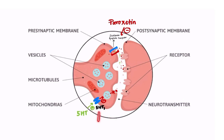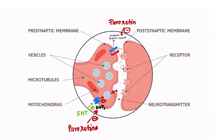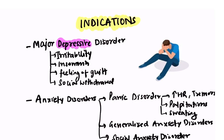There are also 5-HT1 receptors present on the presynaptic side. Their function is that when they receive 5-HT, they inhibit the release of vesicles into the synaptic cleft. Paroxetine also blocks this receptor, and hence vesicle release is uninhibited. By both these mechanisms, paroxetine increases the levels of serotonin in the synaptic cleft.